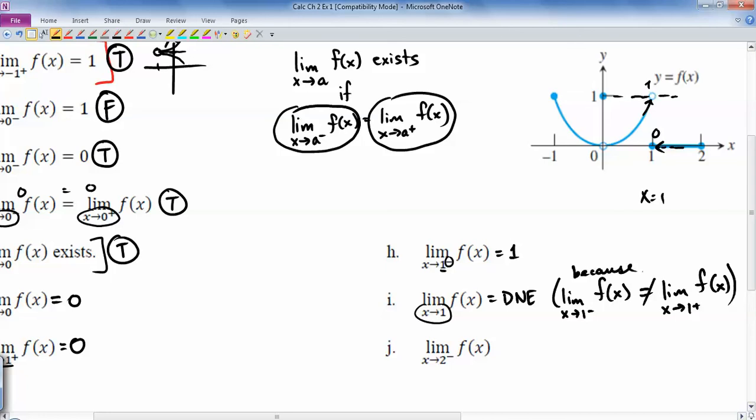Okay. And then the last one says, what happens as x goes to 2 from the left? Well, as I approach 2, but from this side, the y values zone in on 0. So this would be 0.